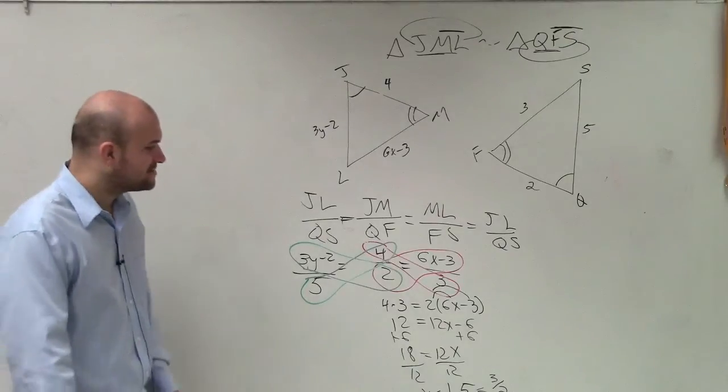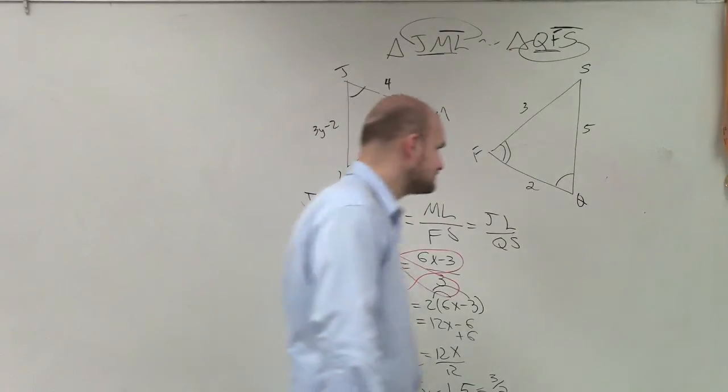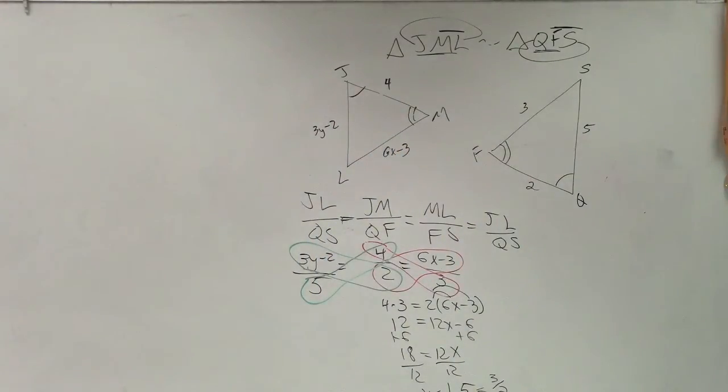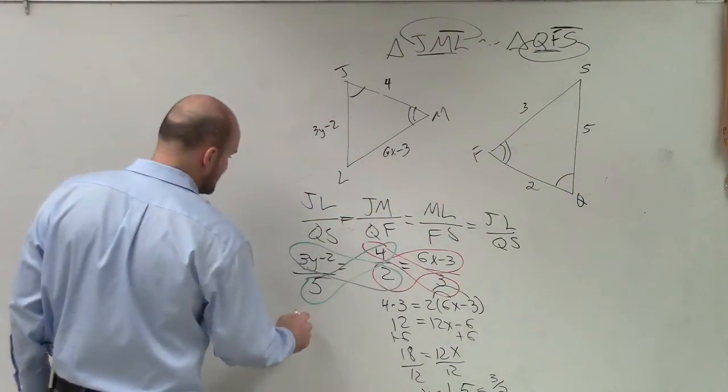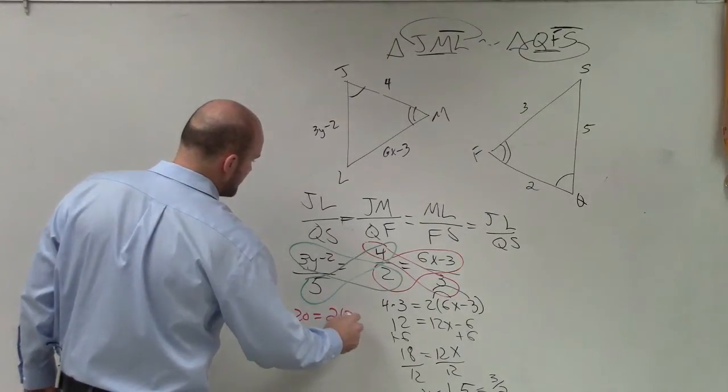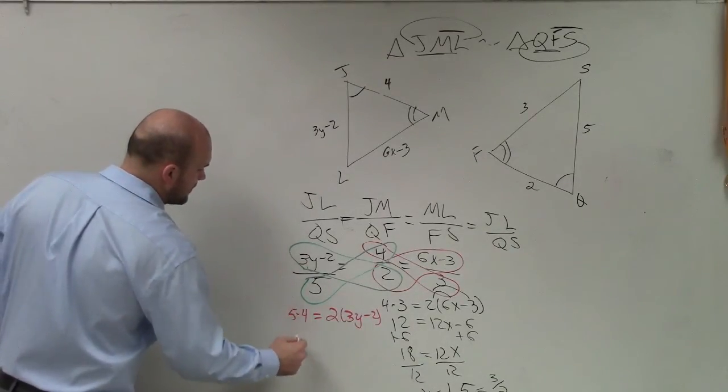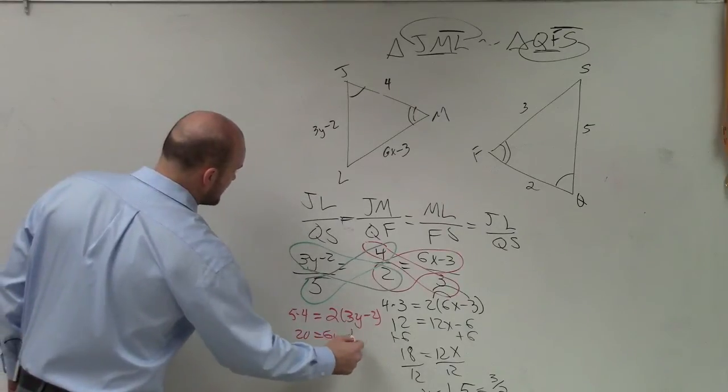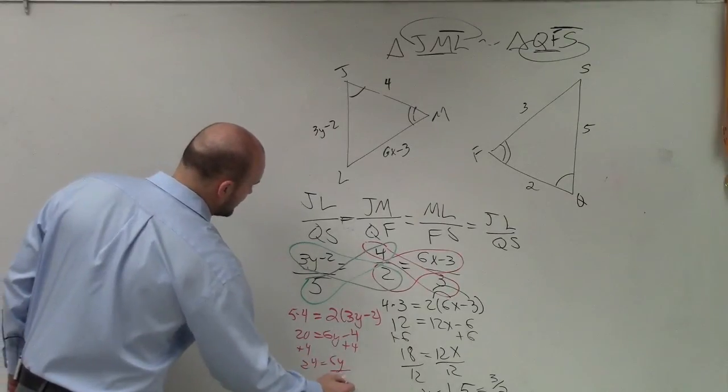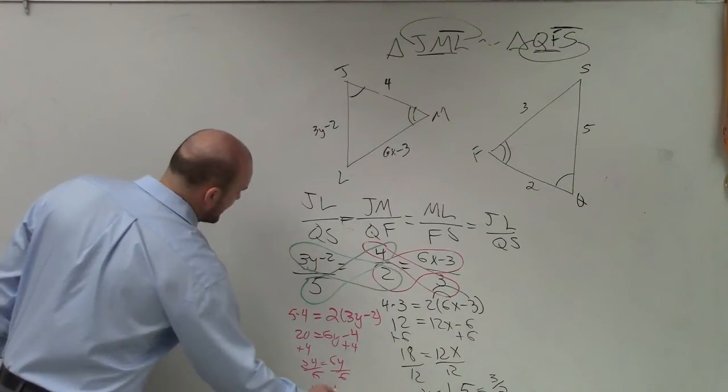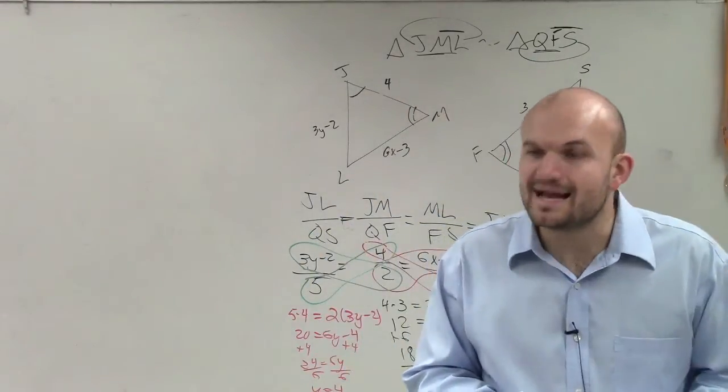So now looking over here, let's go ahead and finish this up. So by applying cross multiplication, 5 times 4 is 20 equals 2 times 3y minus 2. That becomes 20 equals 6y minus 4. Add 4. 24 equals 6y. Divide by 6. Y equals 4. Therefore, ladies and gentlemen, in this problem you can now say what y is and what x is.